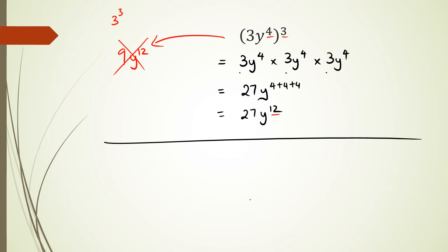Another quick example: 2x to the power of 3, all to the power of 4. For the x part: three times four is 12. For the coefficient: 2 to the power of 4, which is two times two times two times two. That's 4, then 8, then 16. So the final answer is 16x to the power of 12.